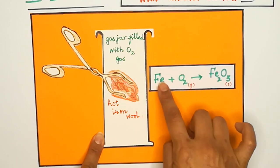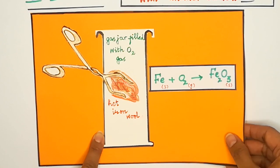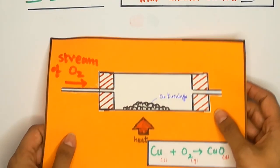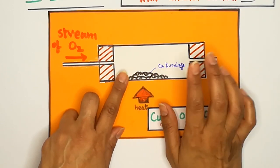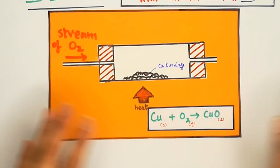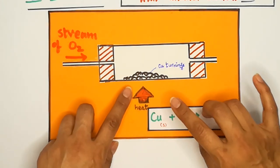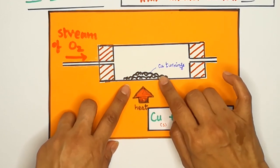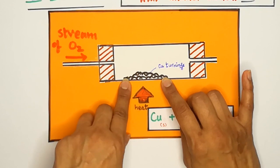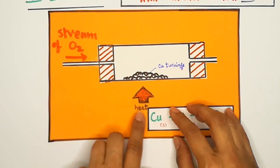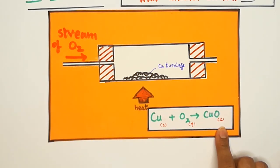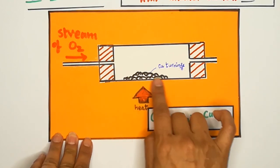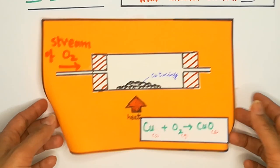Another example: copper is too unreactive to catch fire in oxygen at room temperature. However, if we heat copper in a stream of oxygen, the surface of copper turns black. Heated copper in a stream of oxygen reacts to form copper oxide, which is a black solid. This is how metals react with oxygen to form metal oxides.